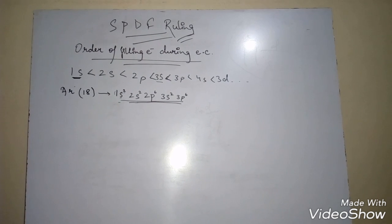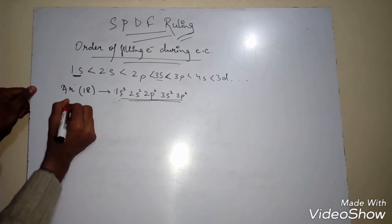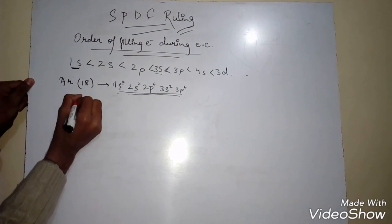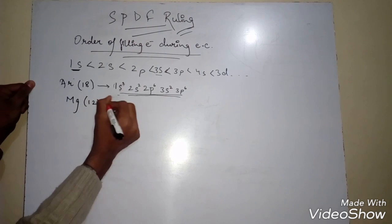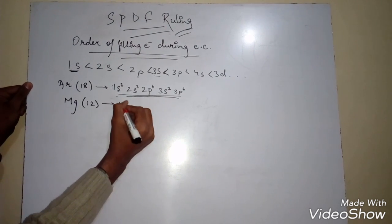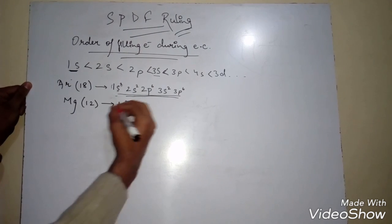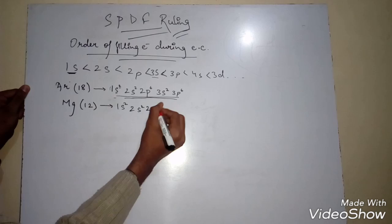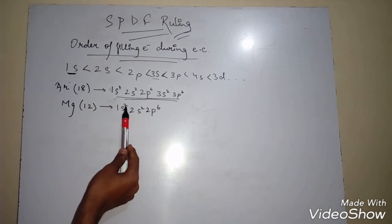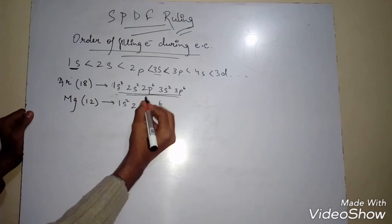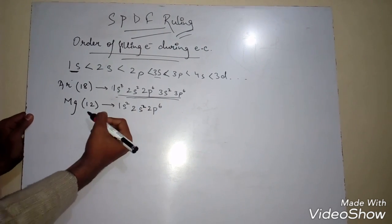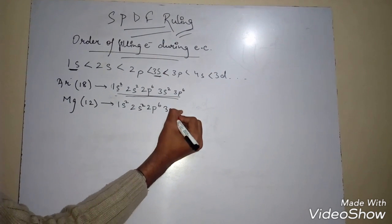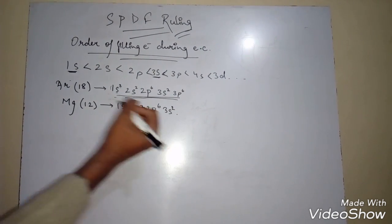Now let's take another example: Magnesium with atomic number 12. We follow the same pattern: 1S² (two electrons), then 2S² (two more, total four), then 2P⁶ (six more, total ten). We now have two electrons remaining, and the next subshell to be filled is 3S. We write 3S² with two electrons, giving a total of twelve. This completes the electronic configuration of Magnesium.